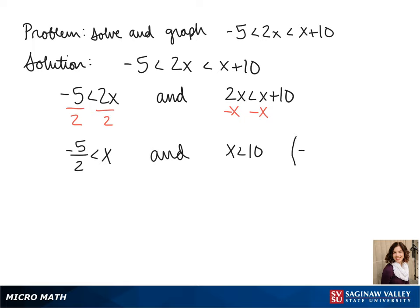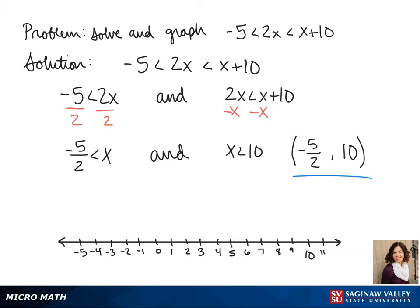We know that x can be anything in between negative 5 halves and 10. So our interval is from negative 5 halves to 10. Neither of which are included so they both get parentheses.